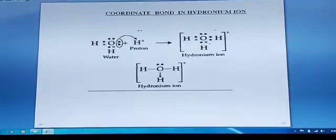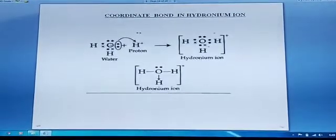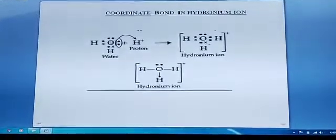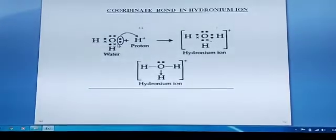Now, you can see that this pair of electrons is not being in use. Similarly, there is another pair of electrons that is not being in use. These two pairs of electrons which are not being in use are called lone pairs.